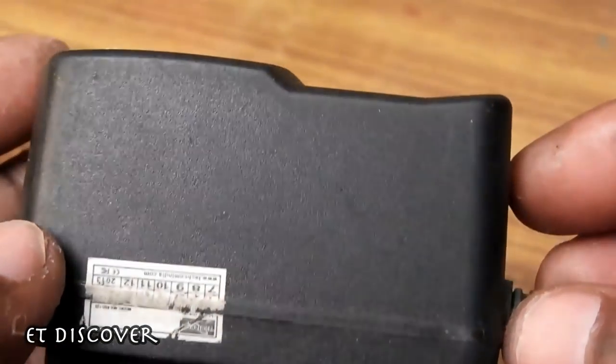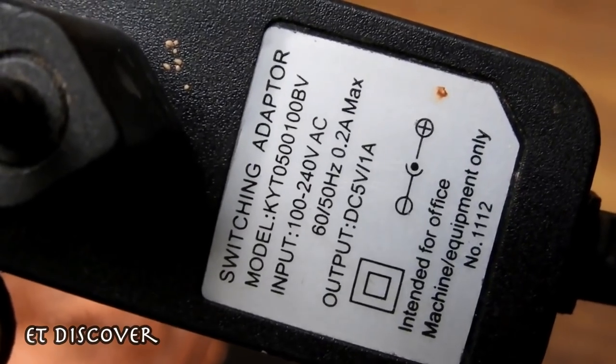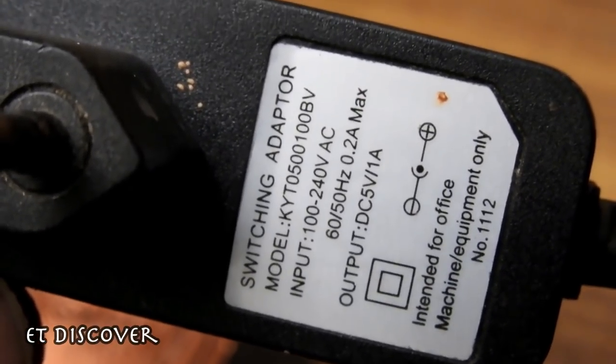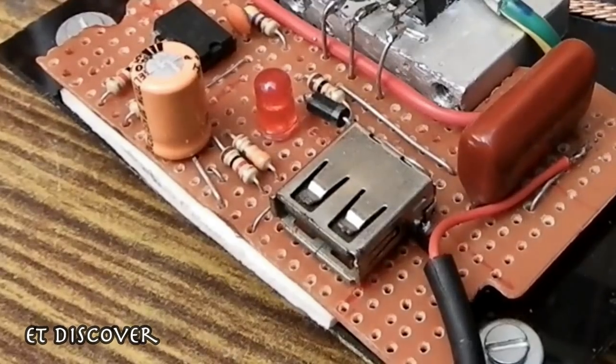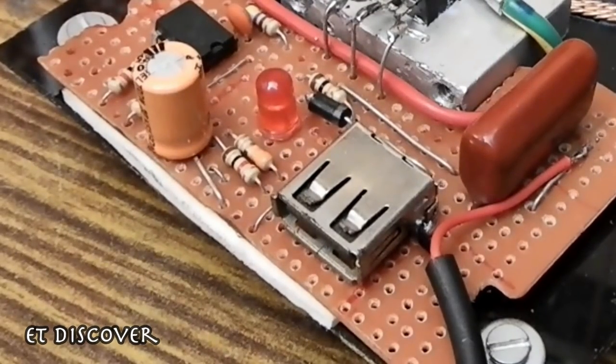So now we need a 5V power source. I chose a 5V mobile charger which gives maximum 1 amp. I put here another USB socket which will help you to charge a power bank.